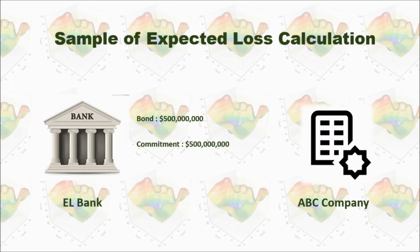Let's take a look at our example. For example, we are this EL bank. Another party is the ABC company.